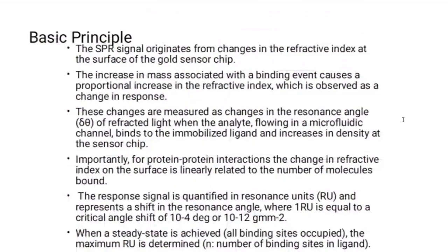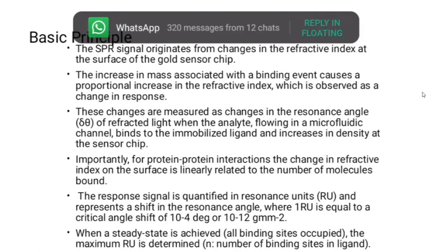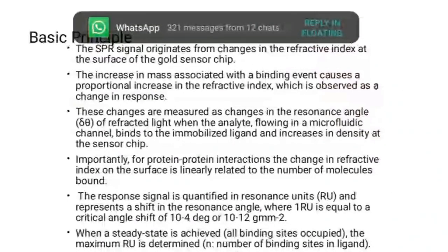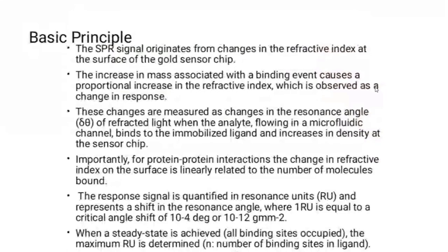The basic principle is that the SPR signal originates from changes in the refractive index at the surface of the gold sensor chip. The increase in mass associated with a binding event causes a proportional increase in the refractive index, observed as a response unit change. These changes are measured as change in resonance angle. The change in refractive index on the surface is linearly related to the number of molecules binding — so we can calculate stoichiometry from SPR as well. To summarize: first is kinetics, second is affinity, and third is stoichiometry.